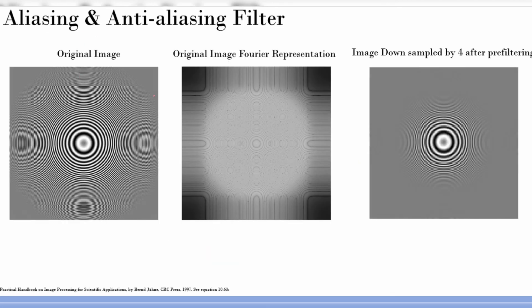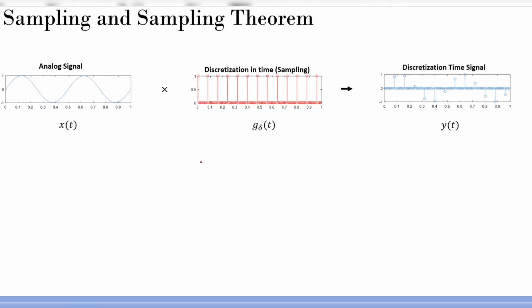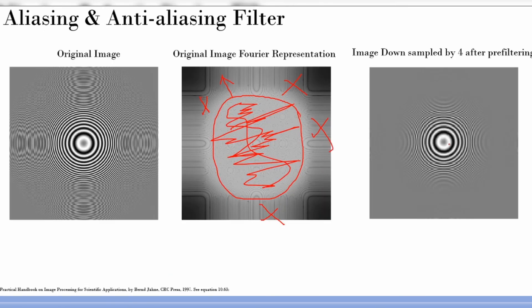Now let me show you this with the original image again and its Fourier transform. I am going to do pre-filtering: I design a circular filter in the frequency domain — the region inside the circle is the passband and the region outside is the stopband. Then I do down-sampling on the filtered image, and you can see the result is way better than the directly down-sampled image. Only difference is that I pre-filtered before down-sampling, and you end up with a much better image where the original structure is preserved.